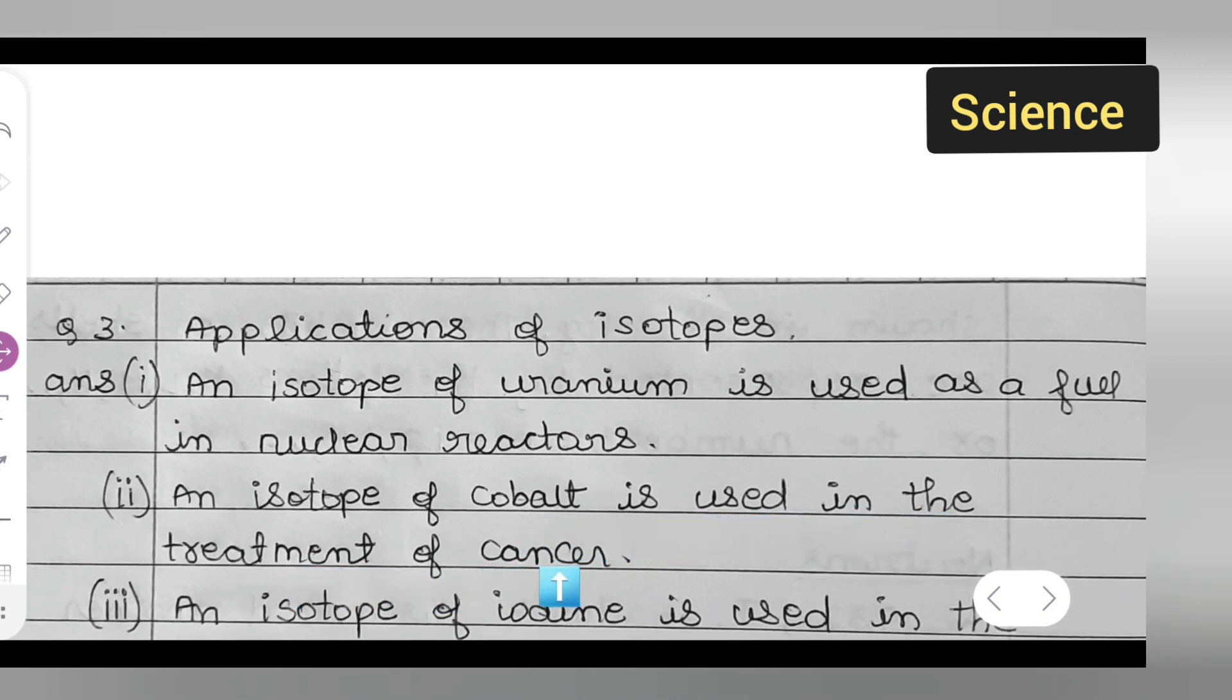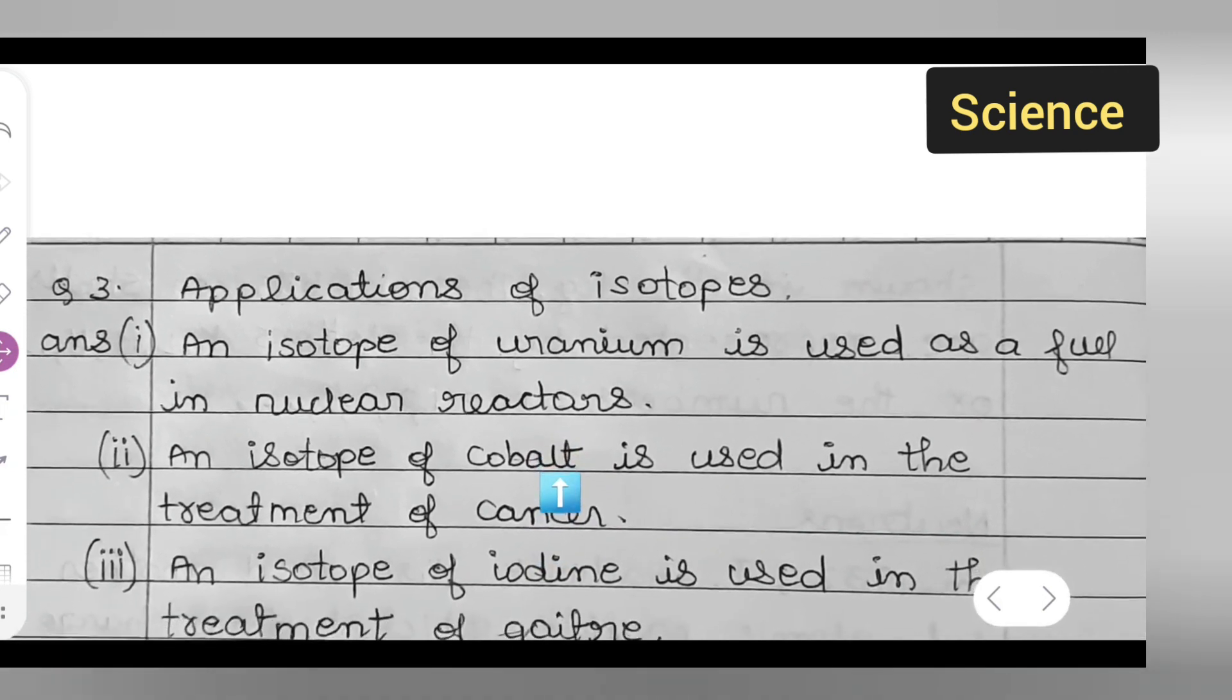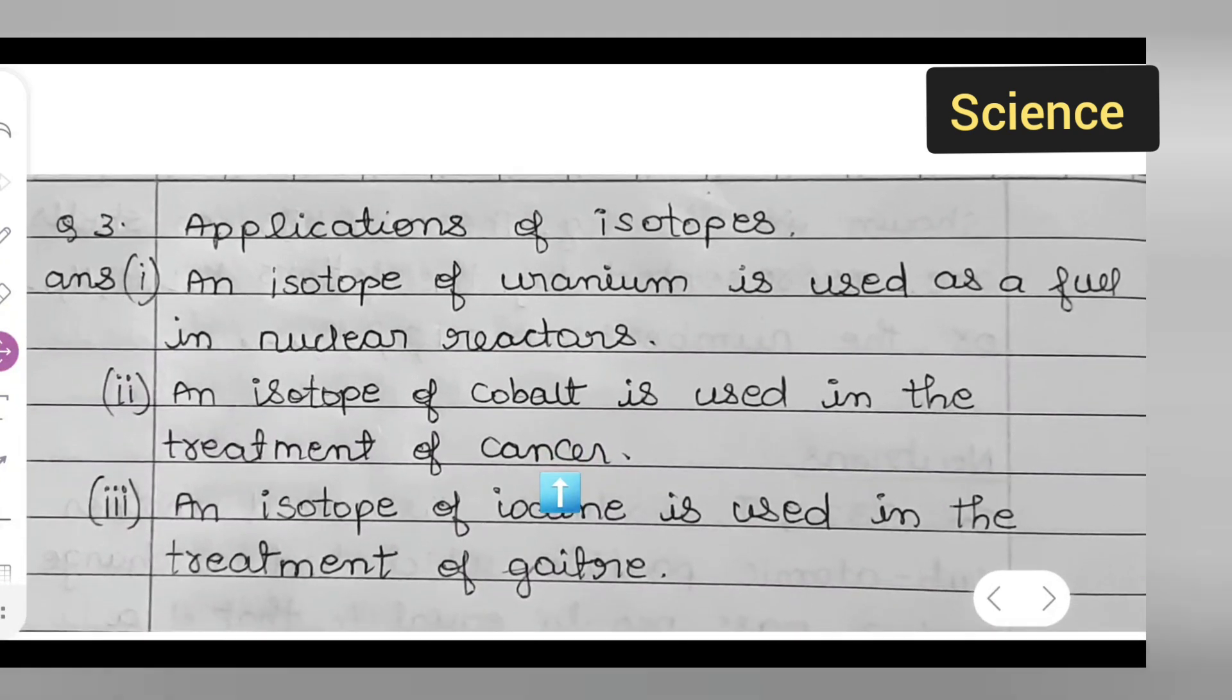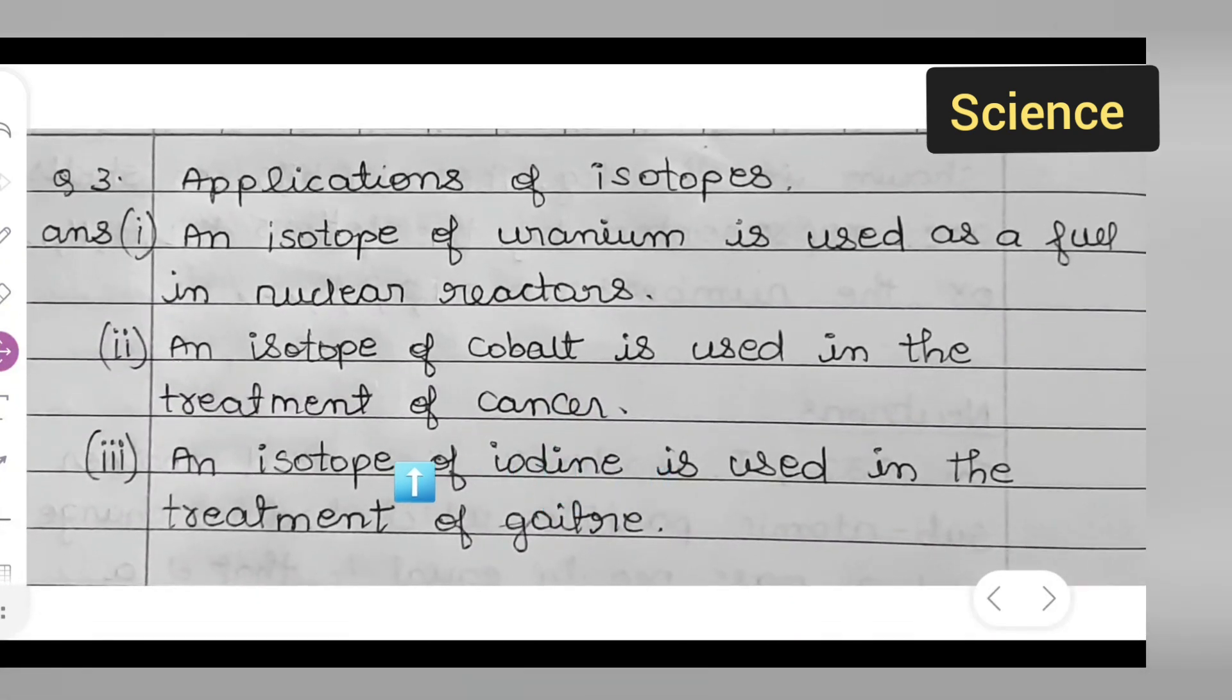This is the second point. Now, let us move towards the third point. Let us see the third point. An isotope of iodine is used in the treatment of goiter.